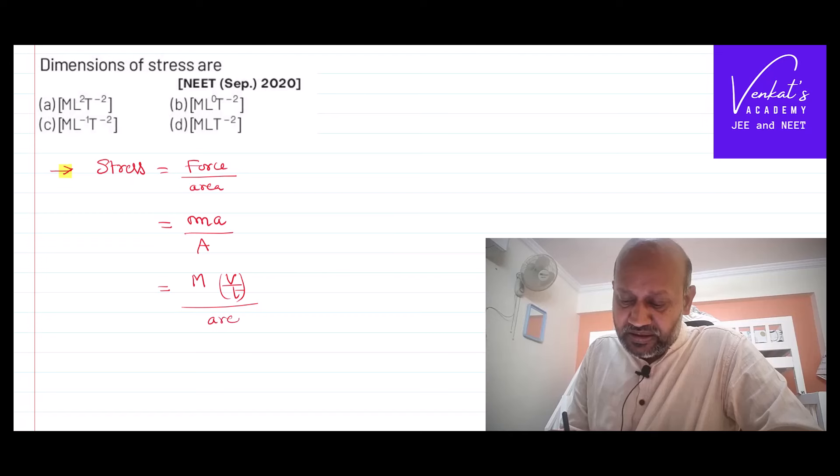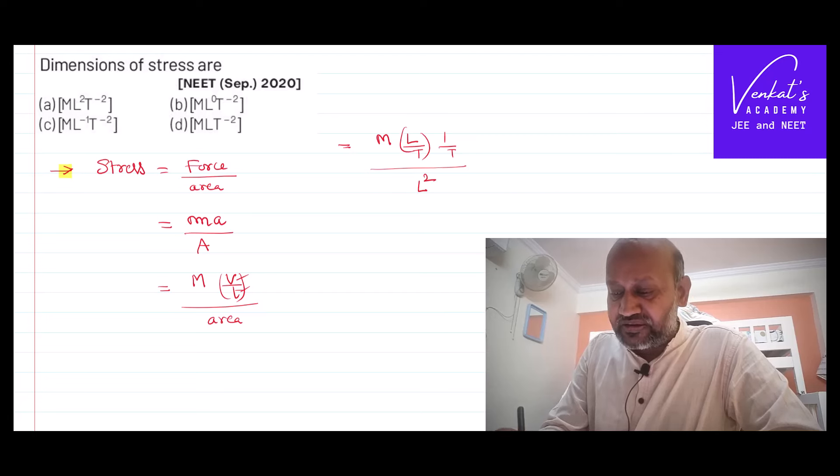Velocity can be written like rate of change of displacement by time, so one by time in the numerator. Area is square of length. So M L T power minus 2 in the numerator, that is force by area.